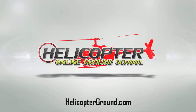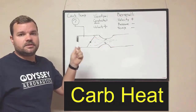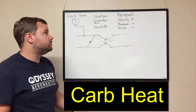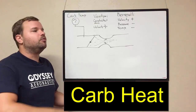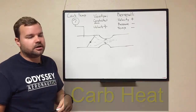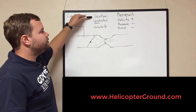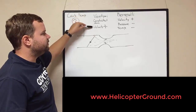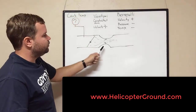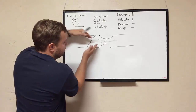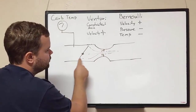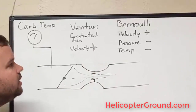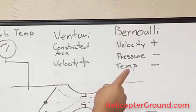We're going to be talking about carburetor heat and carb temperature. To fully understand this, we have to go back to basics — to Venturi and Bernoulli — and that will lead up to carb icing and why we apply carb heat. As a review, the Venturi effect states that as air goes through a constricted area, its velocity increases.